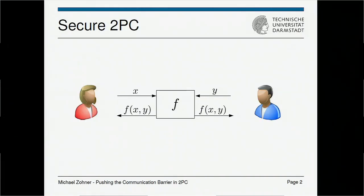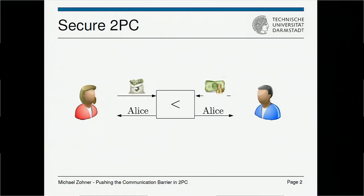As we've heard in the last talk, in secure two-party computation, we have two parties Alice and Bob with inputs X and Y. These two parties want to evaluate a public function F on their inputs so that they only get a result but reveal no information about their inputs. As a toy example, there is the classical Yao's millionaires problem where Alice and Bob want to compare who is richer, simply inputting how much money they have and getting the result without revealing their bank account data.